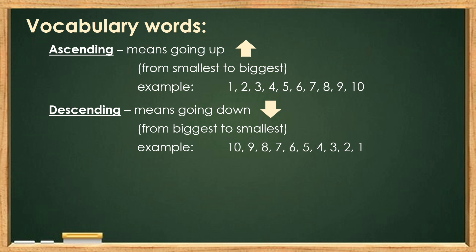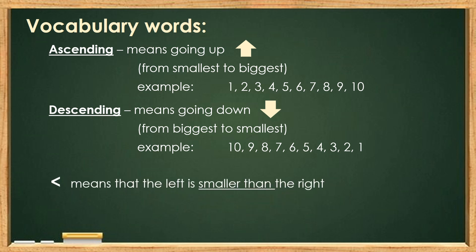Let's review the symbols that we use in comparing numbers. This is the less than symbol. Less than means that the left is smaller than the right. For example, 2 is less than the number 5.